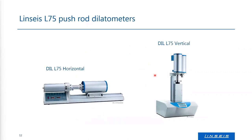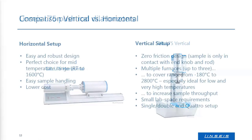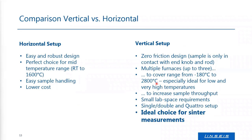We have two kinds of pushrod dilatometers: horizontal ones and vertical ones. Both have advantages and disadvantages. For sintering and for measurements in hydrogen, the vertical systems are preferred. For sintering measurements, it is beneficial if there is no friction on the sample, which is a problem in horizontal pushrod dilatometers.